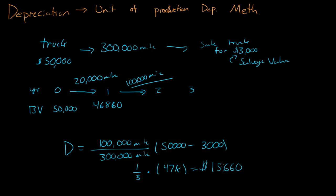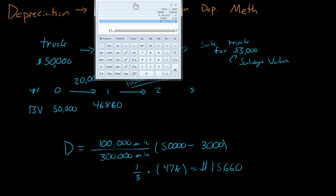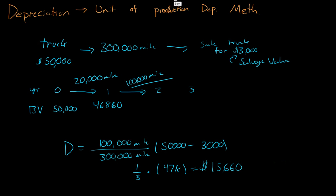So the truck lost a value of $15,660. So the book value of the truck after the second year is the book value of the first year, which was $46,860, minus $15,660. So the book value after the second year is $31,200.